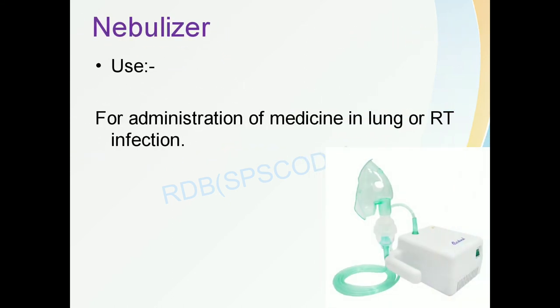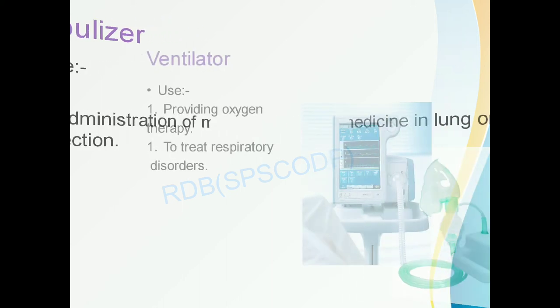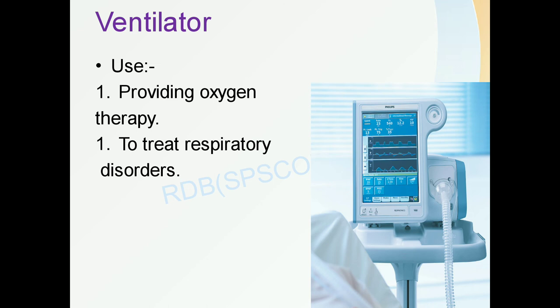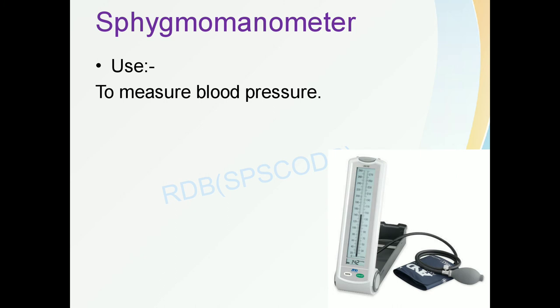Next is the nebulizer, used for administration of medicine in lung or respiratory tract infections. Medicines are delivered directly to the respiratory tract through the nebulizer. Then the ventilator is used for providing oxygen therapy and to treat respiratory disorders — when a patient is unable to breathe or obtain sufficient oxygen naturally, a ventilator provides artificial respiration. Next is the sphygmomanometer, which is used to measure blood pressure.